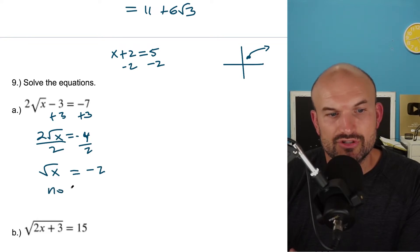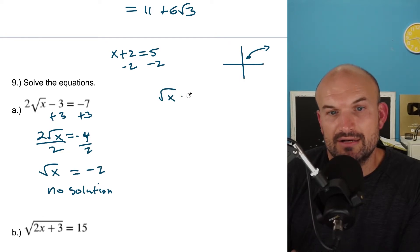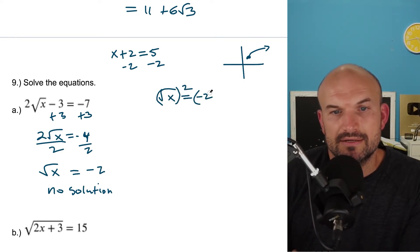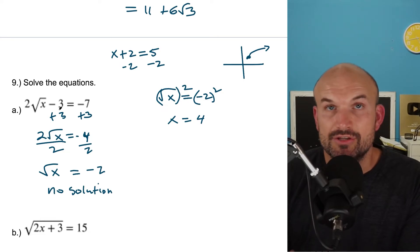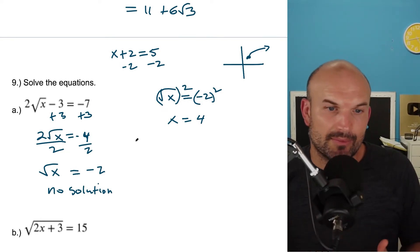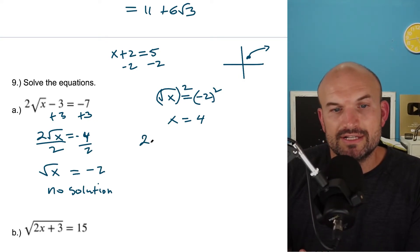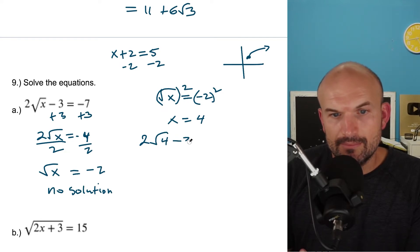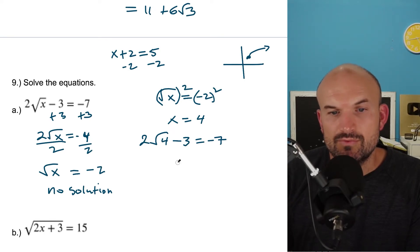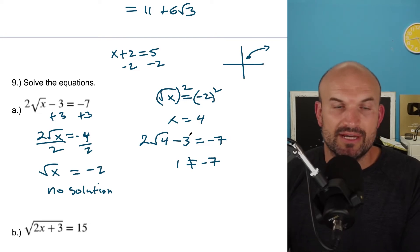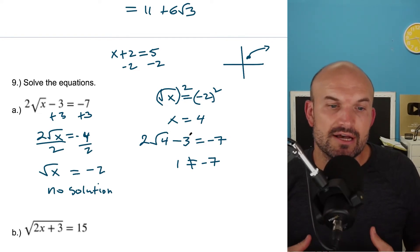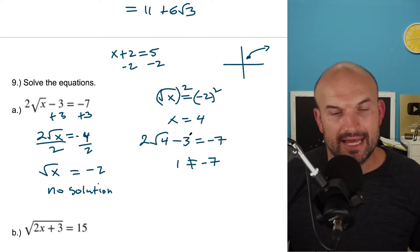You could also check this by squaring both sides to get x = 4, then plugging back into the original equation. That gives 2√4 − 3 = 2(2) − 3 = 1, which does not equal −7. So make sure when you apply your operations or simplify, you go ahead and check your work.